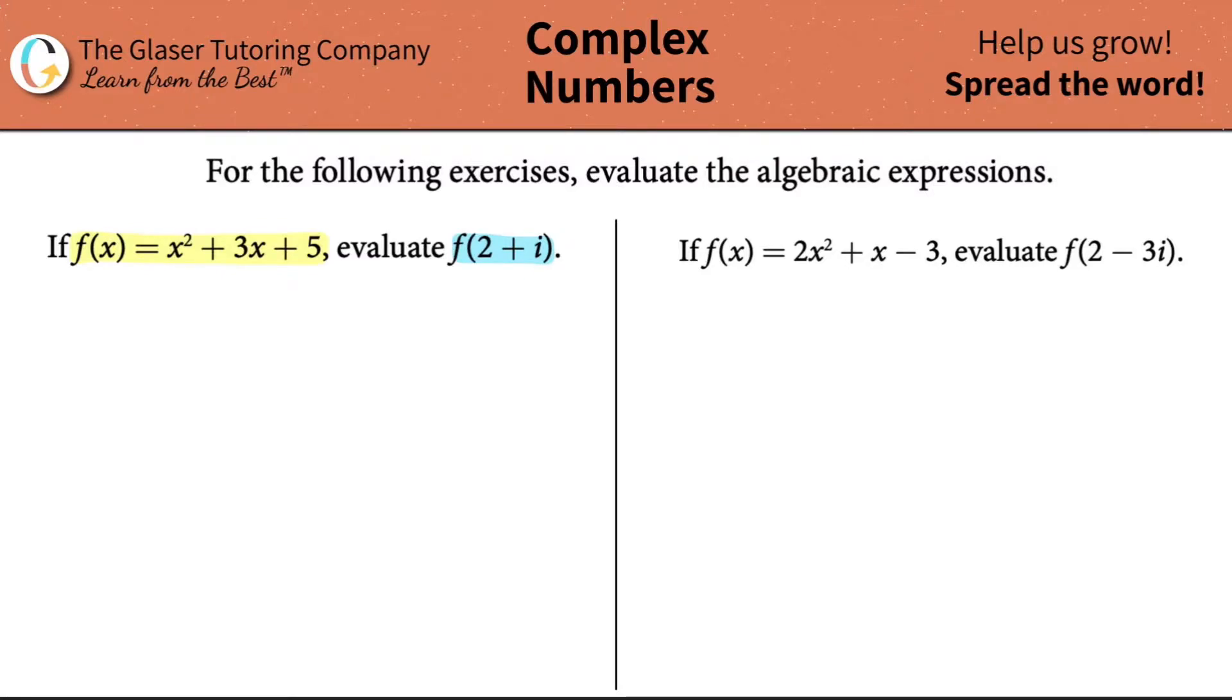Imaginary numbers are numbers that are not real. So there are real numbers, actual values like 3, 5, 2, negative 2, negative 5. If a number is not real and it is imaginary, we denote that by i's. So i is an imaginary number.